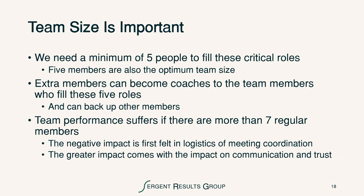As with any team, the size of a guiding council is very important. We need a minimum of five people to fill the critical roles, and five members is also the optimum team size. Extra members can become coaches to the five role-holders and back up other members. However, team performance suffers if there are more than seven regular members. If the team gets too large, the negative impact will first be felt in meeting coordination logistics, and greater impact will come in communication and trust — absolutely vital if you're going to guide other teams.